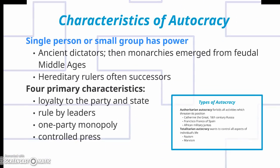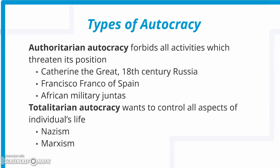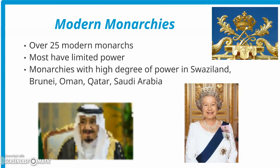Another form of government that we have today is autocracy. An autocracy describes a government in which a single person or small group — also known as an oligarchy — has power. There were ancient dictators, then monarchies emerged from the feudal Middle Ages with hereditary rulers as the method of succession. Four primary characteristics include loyalty to the party and the state, rule by the leaders, one-party monopoly, and control of the press. Authoritarian autocracy forbids all activities which threaten its position — examples include Catherine the Great in 18th-century Russia and Francisco Franco of Spain. Totalitarian autocracy is more severe and wants to control all aspects of an individual's life; examples include Nazism in World War II and Marxism in the Soviet Union, China, and arguably Cuba.